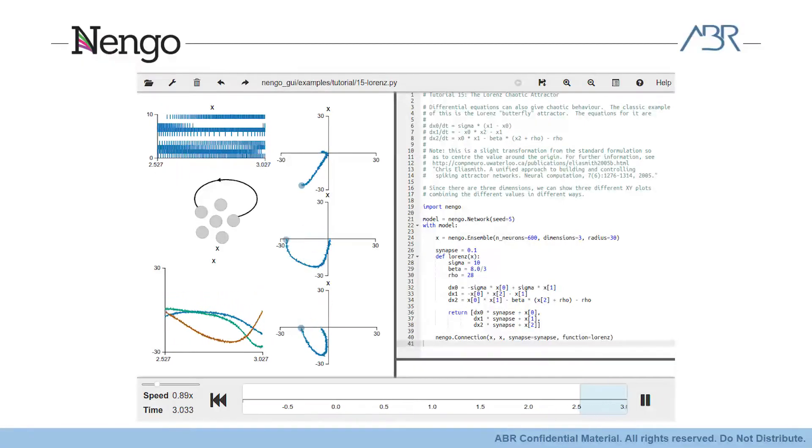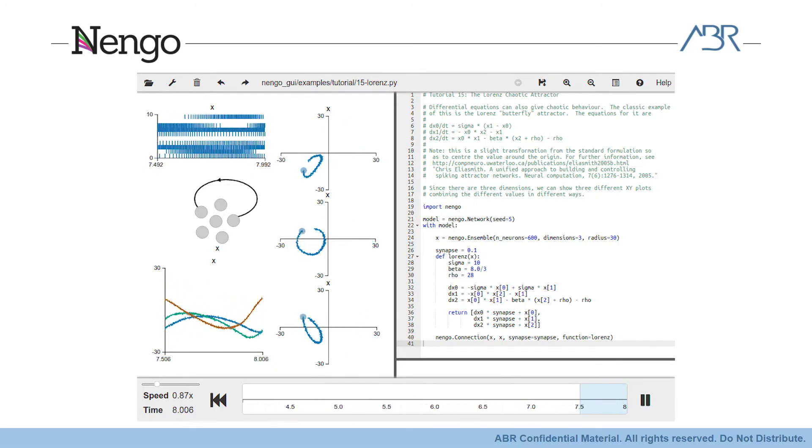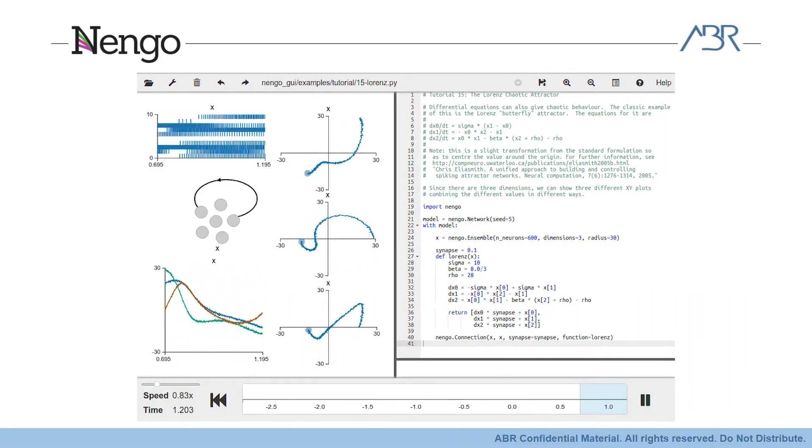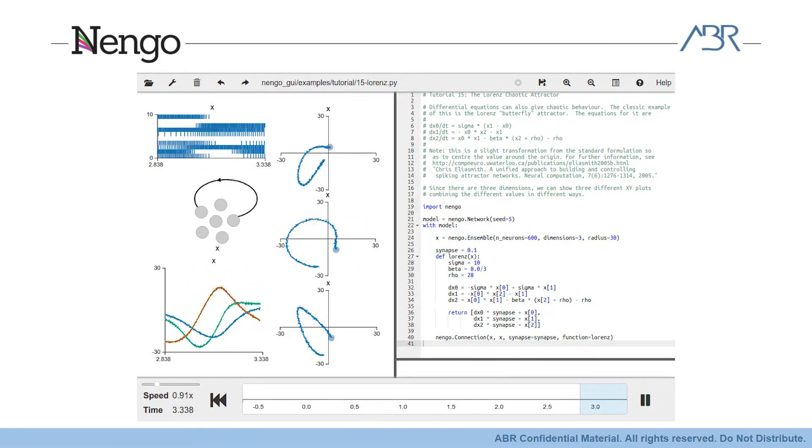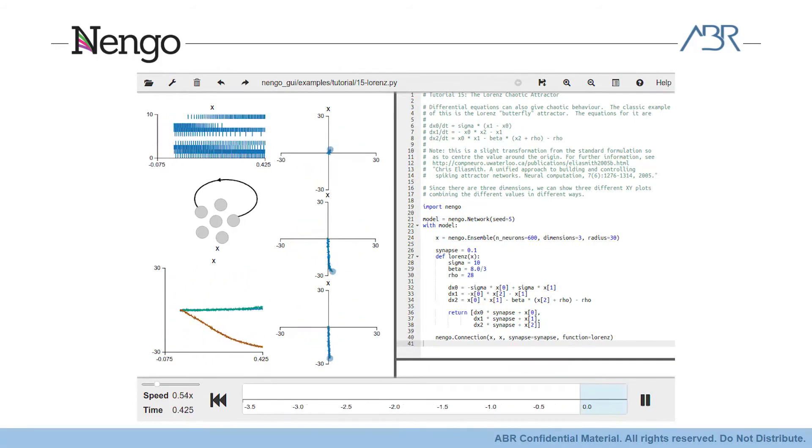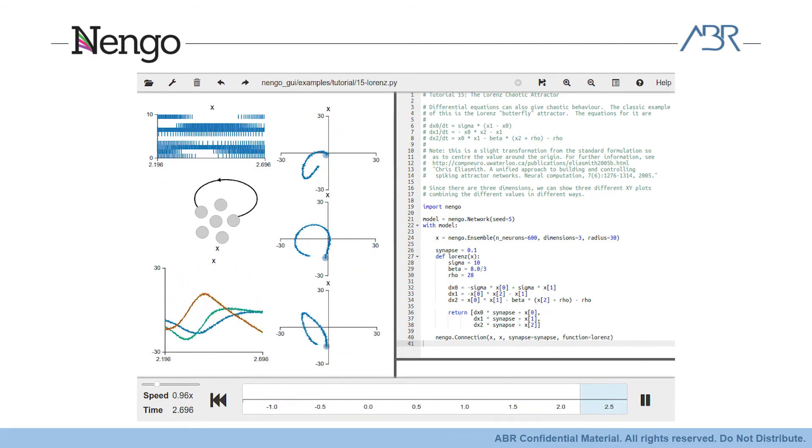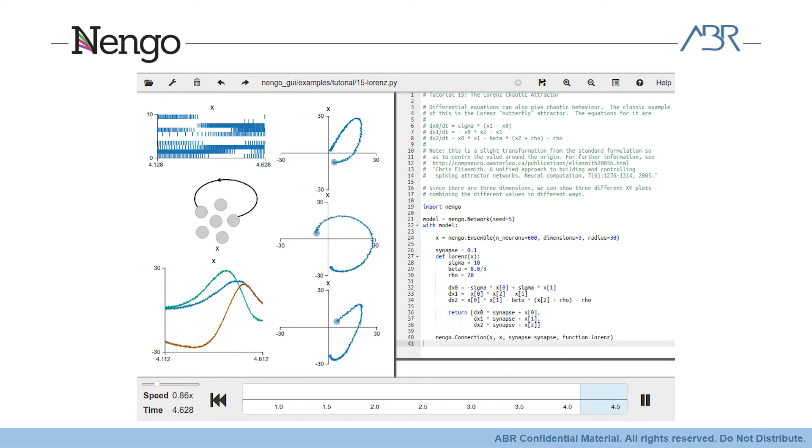On this slide, I'm showing the Nengo GUI again. The model being simulated is just a single population of recurrently connected neurons implementing Lorenz attractor dynamics. The GUI is also visualizing the data flowing through the network as it's running. We can see a spike raster plot at the top, and then using population decoding, we are also viewing the 3D signal represented by this ensemble of neurons plotted against time at the bottom, and then several 2D plots of different represented values plotted against each other on the right. Networks are defined using a Python API with the code for this network shown on the right half.